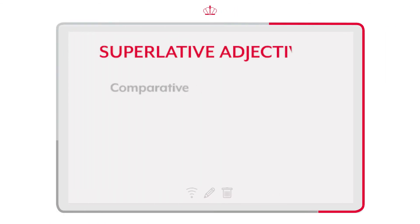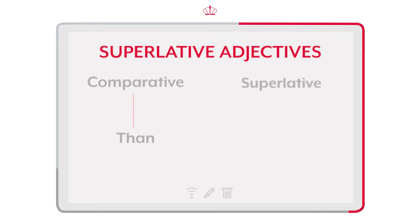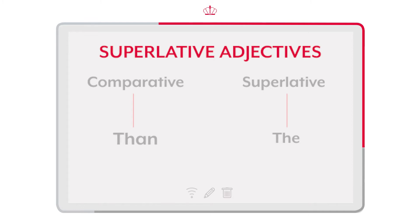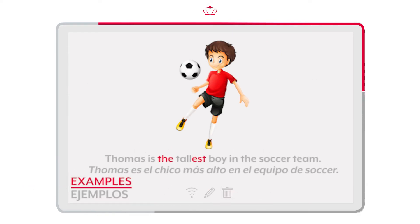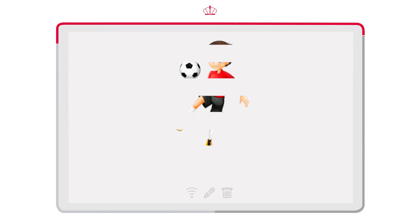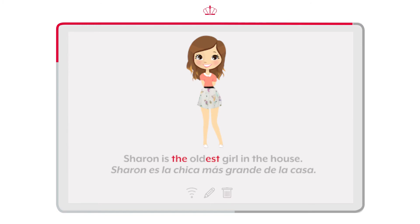As in the comparative we use the word 'than', in the superlatives we use the word 'the'. Así como en los comparativos utilizamos la palabra 'than', en los superlativos utilizamos la palabra 'the'. Por ejemplo: Thomas is the tallest boy in the soccer team. Thomas es el chico más alto en el equipo de soccer. Sharon is the oldest girl in the house. Sharon es la chica más grande de la casa.